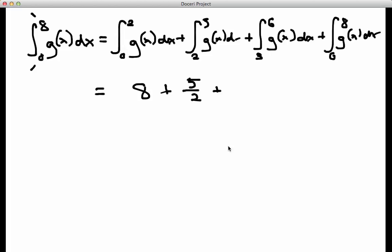The integral from three to six was the triangle that was underneath the x axis. So this area was minus three, very importantly to have that negative sign right there. And then finally, the integral from six to eight was the area of the semicircle, and that was pi over two.